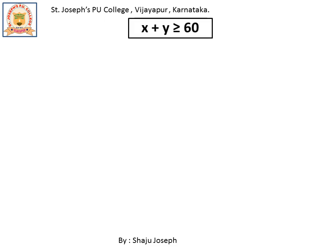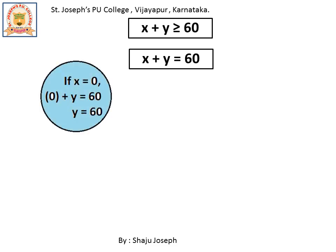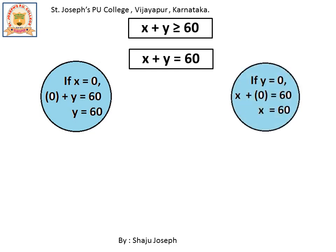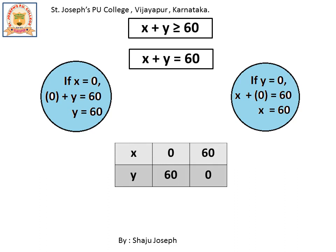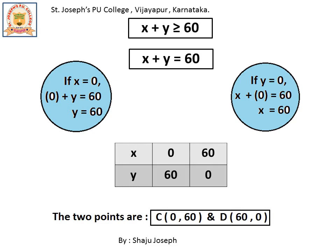Now let us have a look at the next constraint: x plus y greater than or equal to 60. We again convert this into an equation x plus y equal to 60 to find the separating line. Substituting x equal to 0 gives y equal to 60, and substituting y equal to 0 gives x equal to 60. So the two intercept points from the tabular column are (0, 60) and (60, 0). Let us call them C and D.